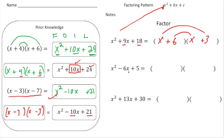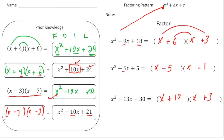Here we have x squared minus 6x plus 5. Our first terms are an x and an x. We need what times what gives us a product of 5, but a sum of negative 6 — that's negative 5 and negative 1, because negative 5 times negative 1 gives us 5, and negative 5 plus negative 1 gives us negative 6. Last one: x squared plus 13x plus 30. We need what times what gives us 30 but adds up to 13 — that's 10 and 3, because 10 times 3 is 30 and 10 plus 3 is 13.